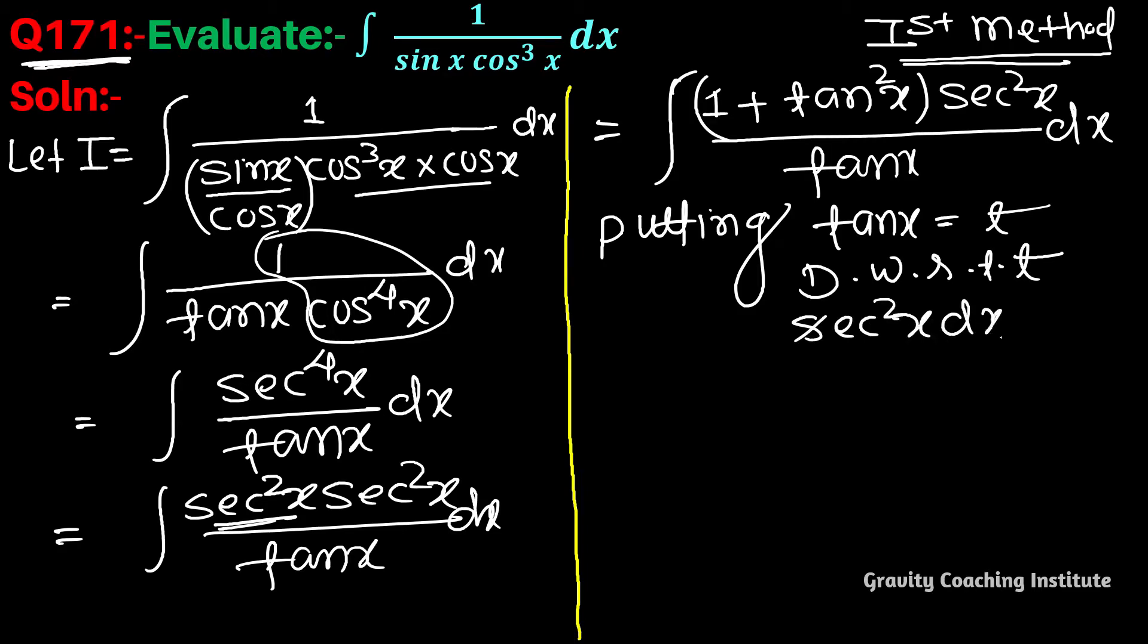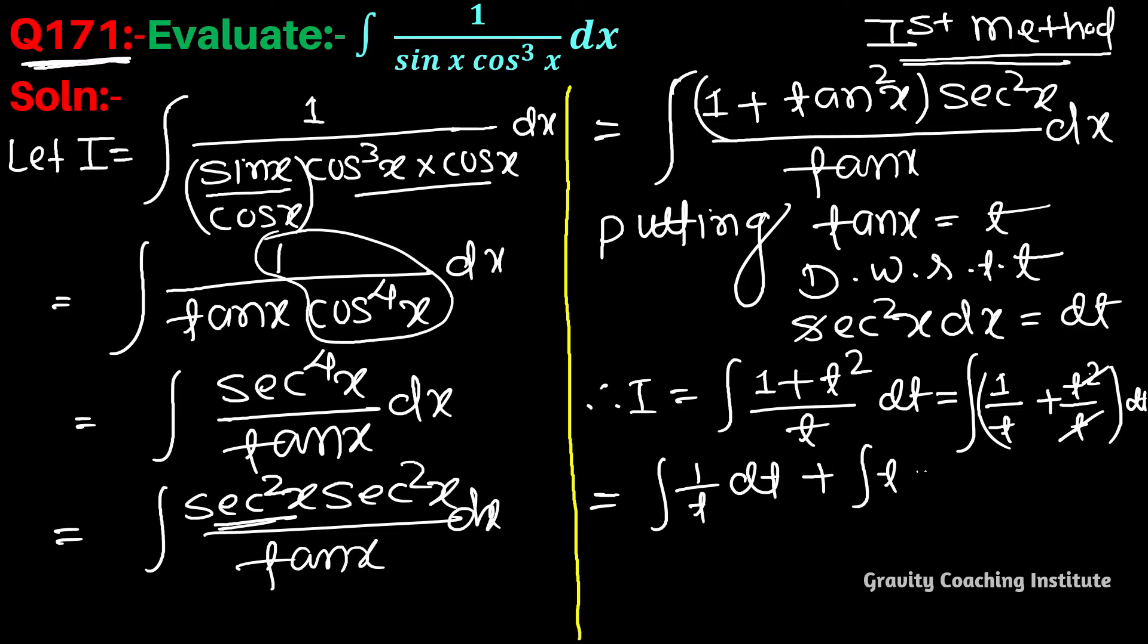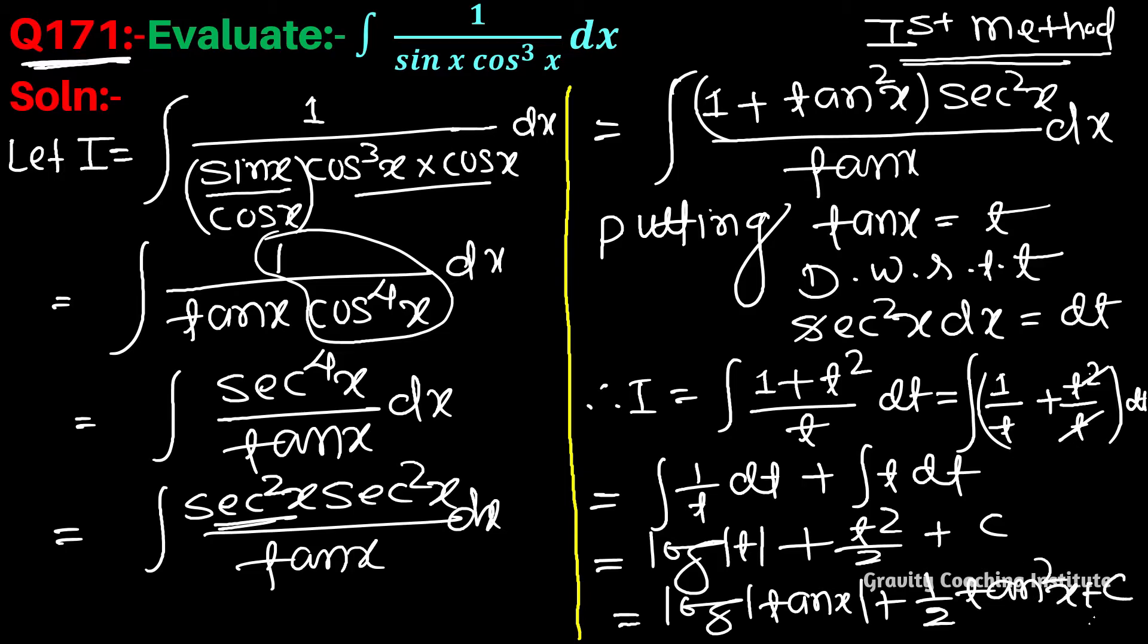Differentiation gives sec square x dx equal to dt. Therefore I equal to integration 1 plus t square upon t dt. Split this fraction: integration 1 by t plus t dt. This gives log mod t plus t square by 2 plus c, equal to log tan x plus 1 by 2 tan square x plus c. Answer.